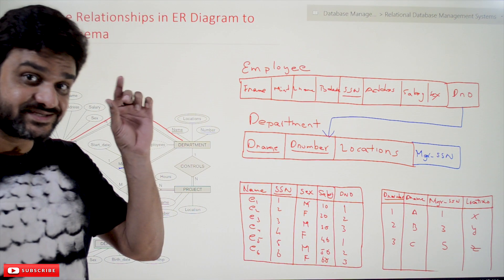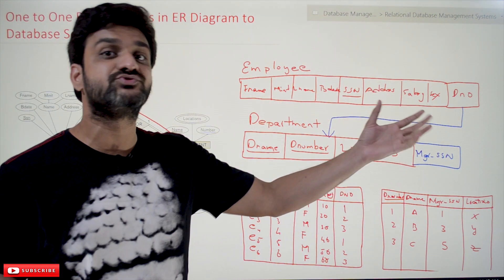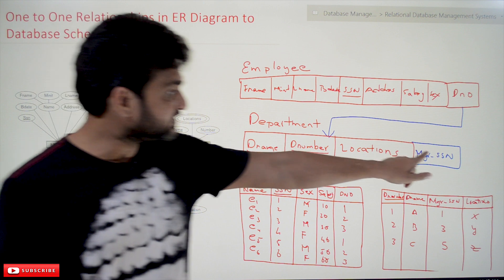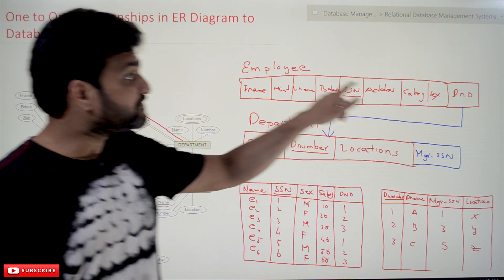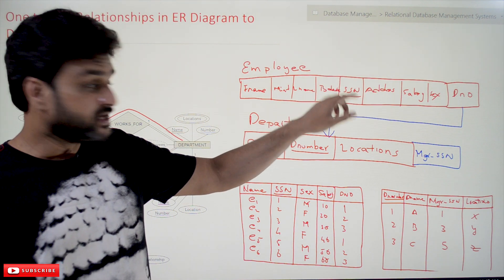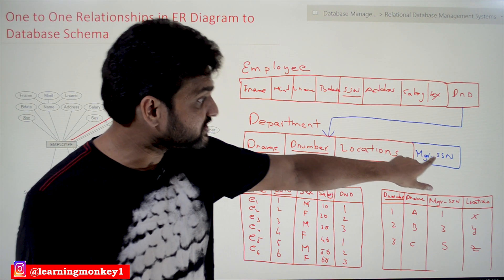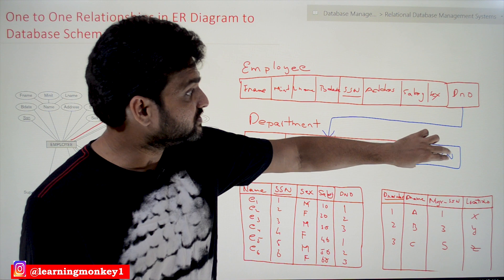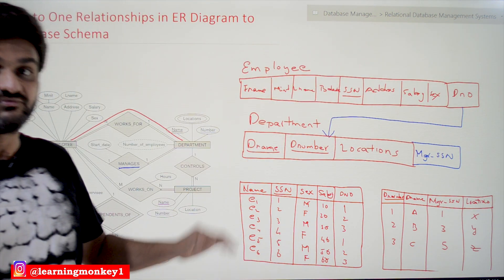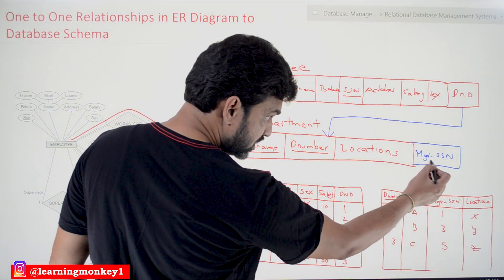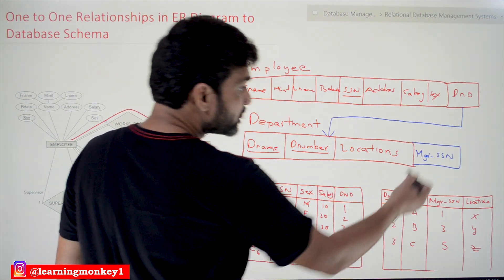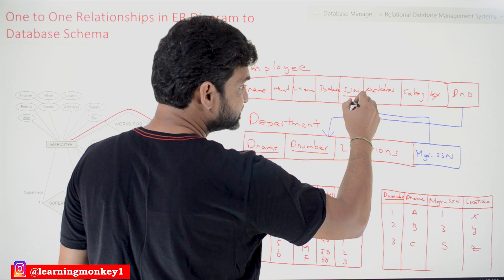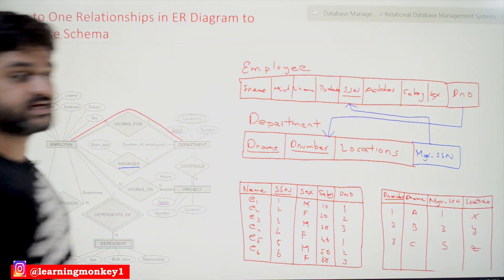The manager is identified using SSN. If you use names of the managers, there will be a conflict. The relationship exists between department and employee. Whenever an attribute is referencing an attribute of another table, the attribute to which it is referencing should be a primary key — which we have already discussed. So this new attribute MGR_SSN is referencing the SSN of the employee table.